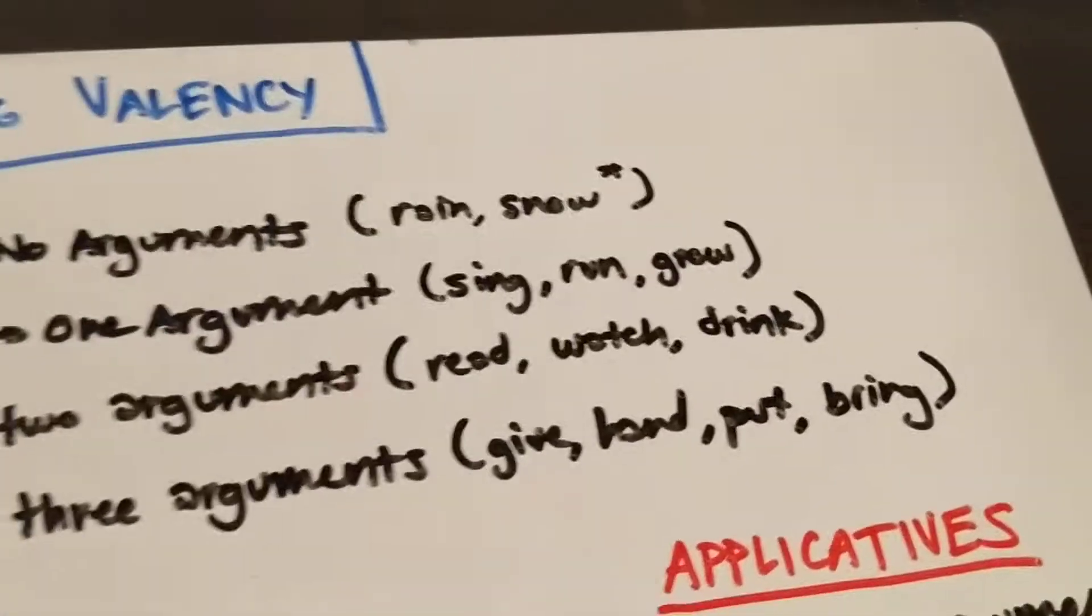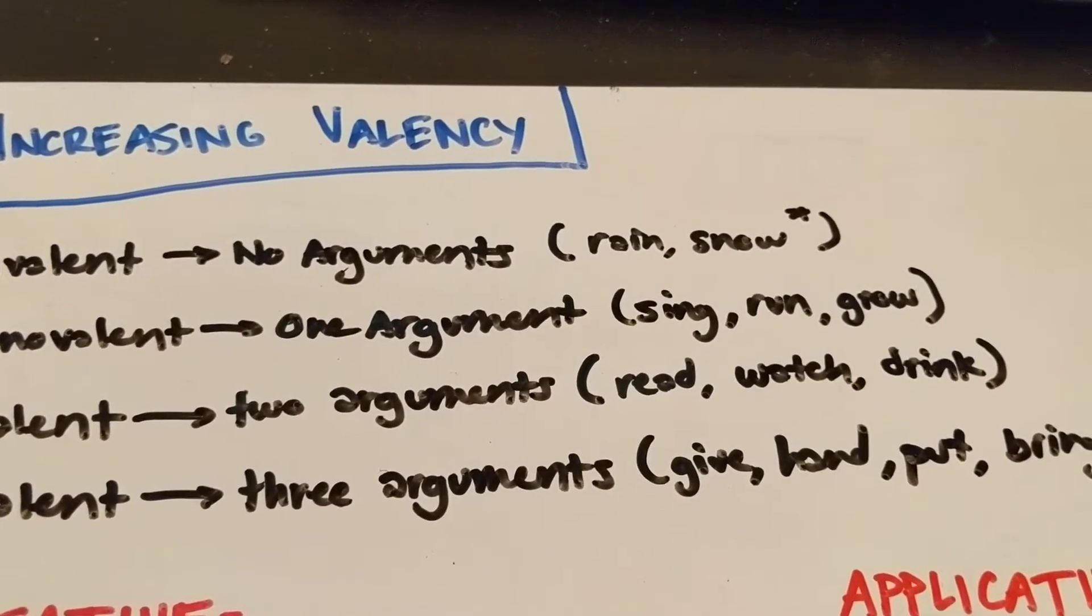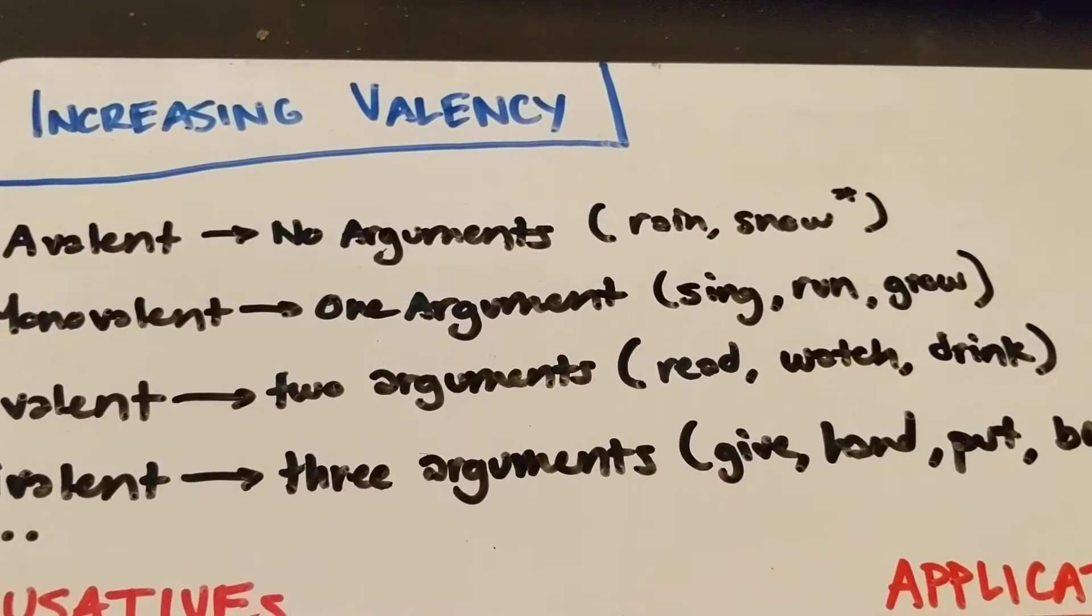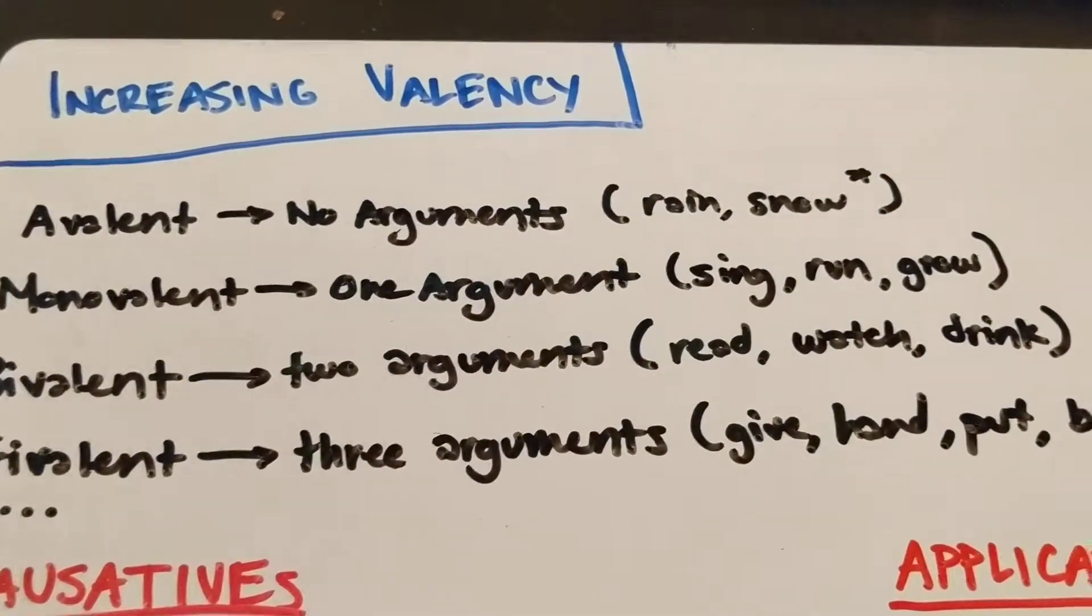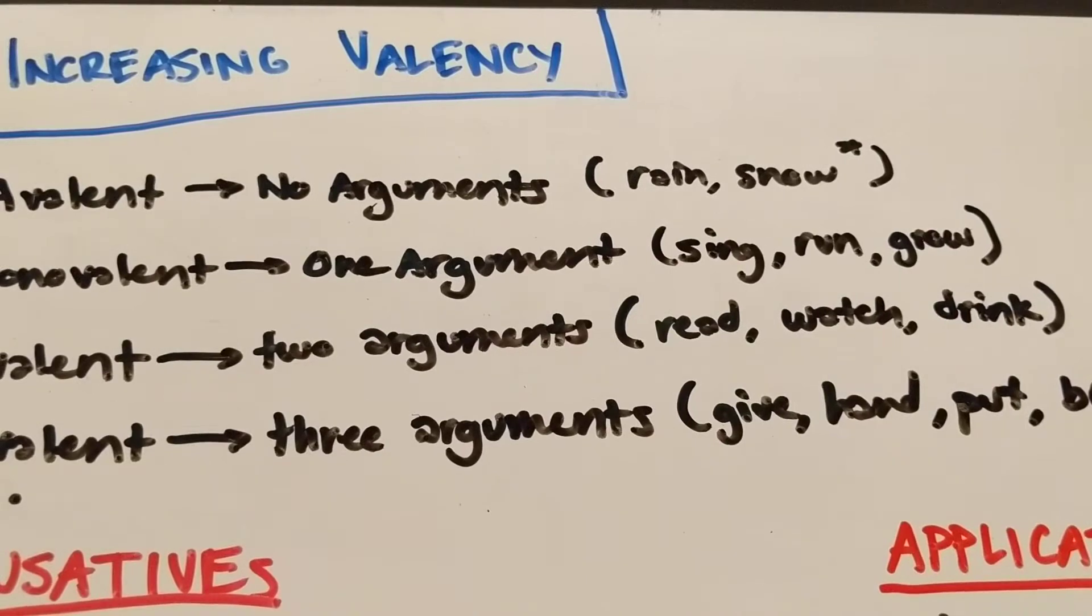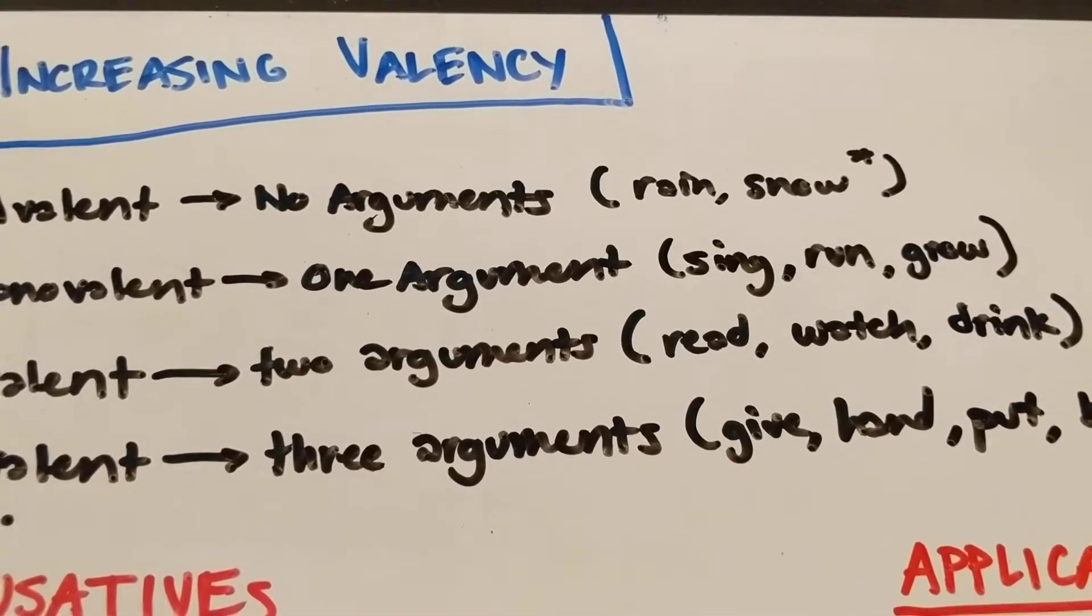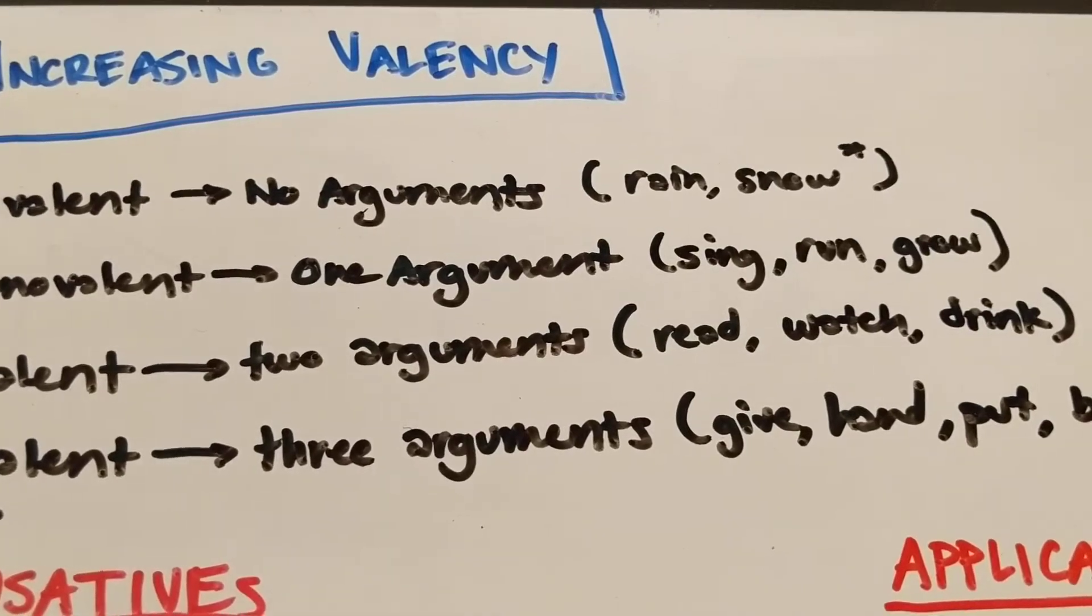Some examples of these: in most languages the verbs rain and snow and things like that are avalent. We don't have avalent verbs in English and so we have to say it rained instead of just rained.